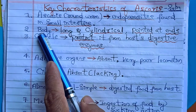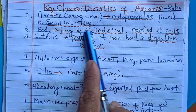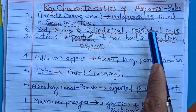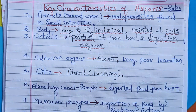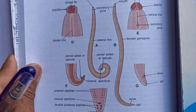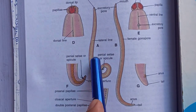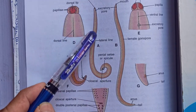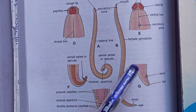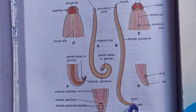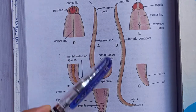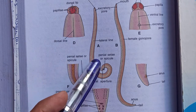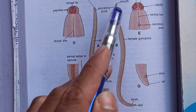The second important feature is that the body of Ascaris is long, cylindrical, and pointed at both ends. You can see this diagram — A1 is male Ascaris and B is female Ascaris. You can see that the body is very long, cylindrical, and pointed at both ends for both male and female.